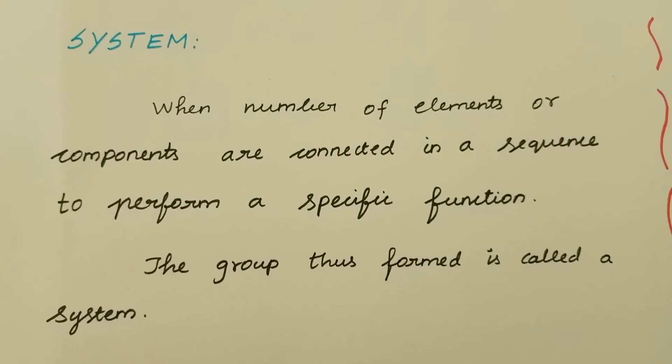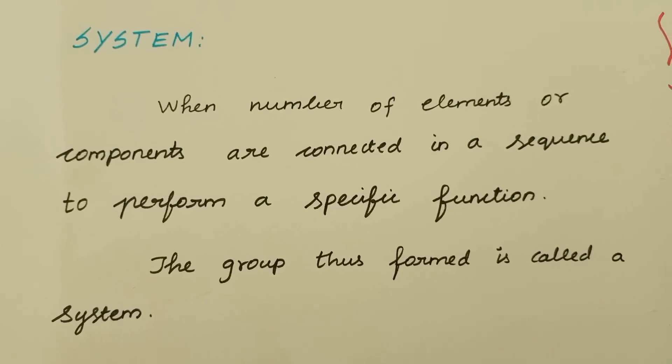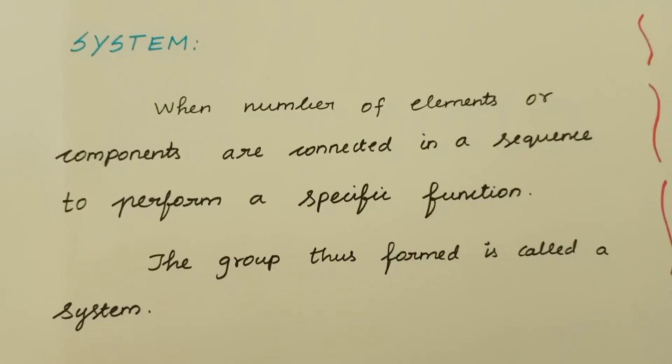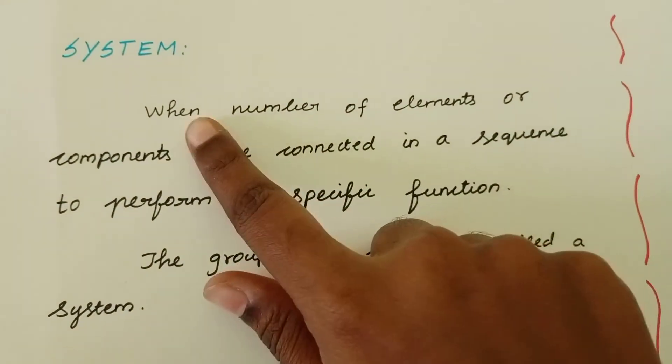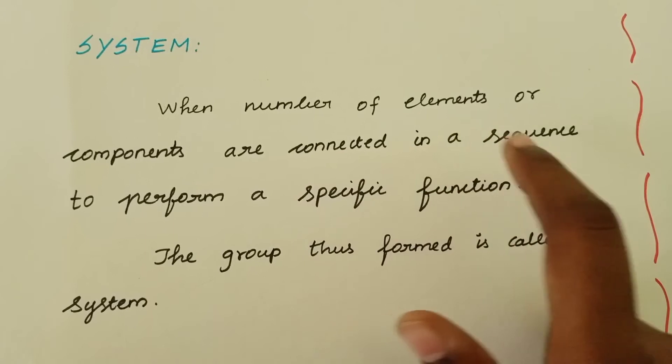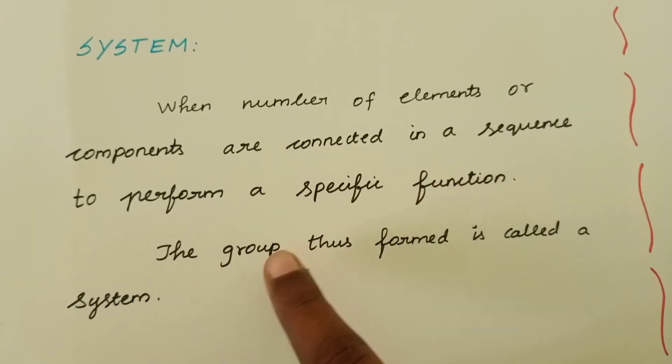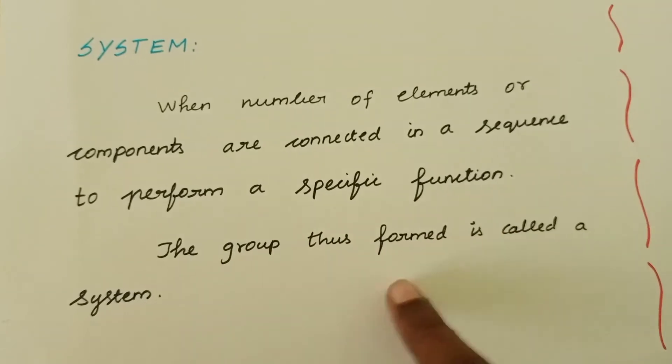First, we need to understand what a system is. A system is when a number of elements or components are connected in a sequence to perform a specific function. The group thus formed is called a system.